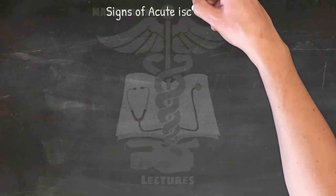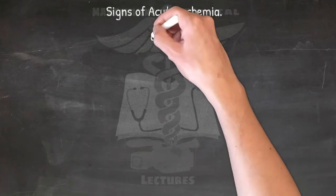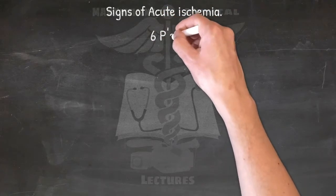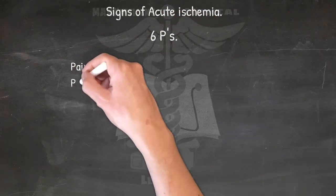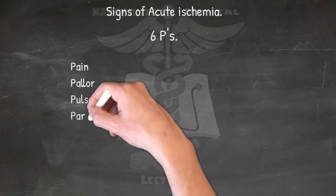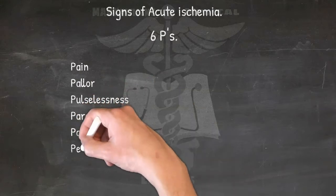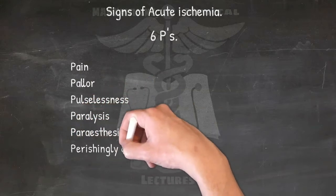Signs of acute ischemia, especially on limbs: the six P's — Pain, Pallor, Pulselessness, Paralysis, Paresthesia, and Perishingly cold.